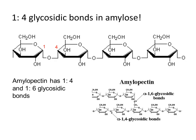Looking at amylopectin with the one-to-four bonds and also the one-to-six glycosidic bonds — an arrow points to where the one-to-six bond is occurring. You can see the number one carbon and then the number six carbon, and so we end up creating these side chains.